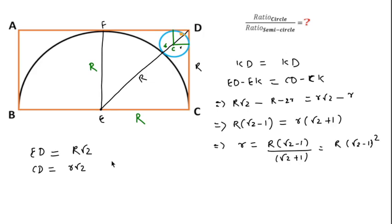So ratio equal to, we can write ratio for this circle pi r square, that is small r square. And ratio for this semicircle is pi by 2 capital R square.